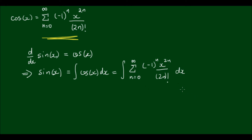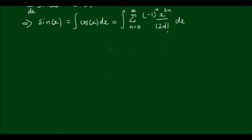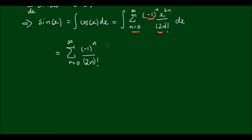Let's see how we go at integrating this expression. Most of the terms can actually come outside of the integral, because negative 1 to the power of n is a constant in front of the variable we are concerned with, as is (2n) factorial, and the summation notation can also come out the front. So we can write the sum from n equals 0 to infinity of negative 1 to the power of n all over (2n) factorial, times the integral of x to the 2n with respect to x.